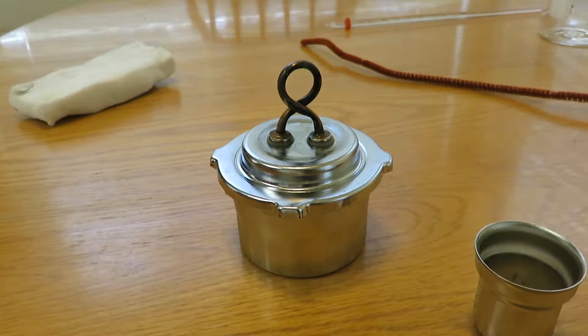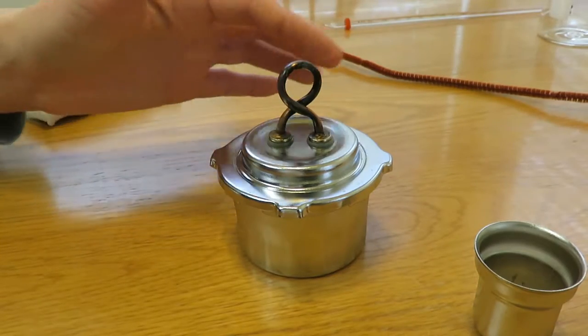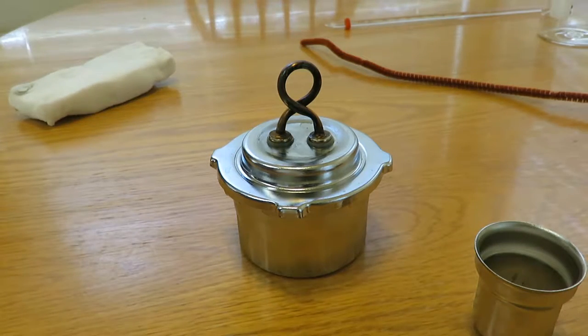We need our alcohol burner for various chemistry experiments we've been doing, but the last time we went to use it, it wasn't burning very well. There's some sort of buildup on what they call the burner torch, the wick area of the burner.